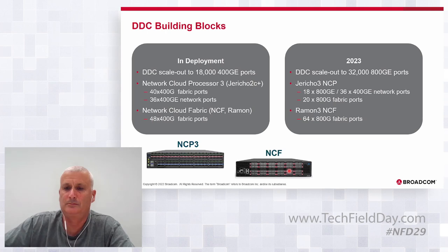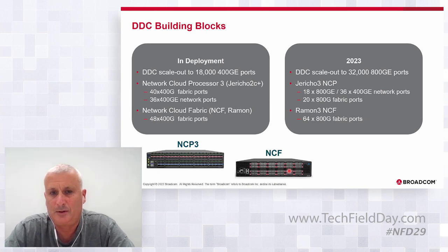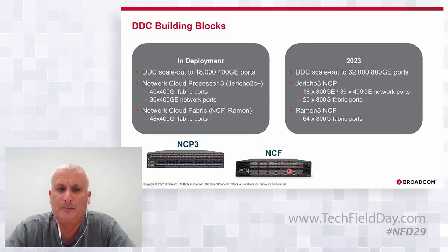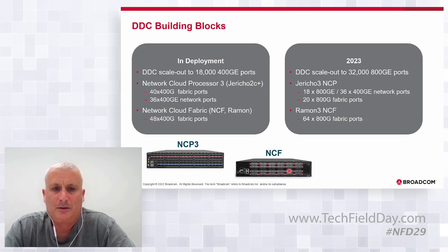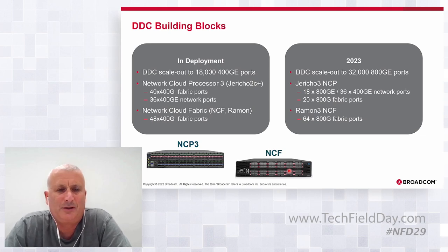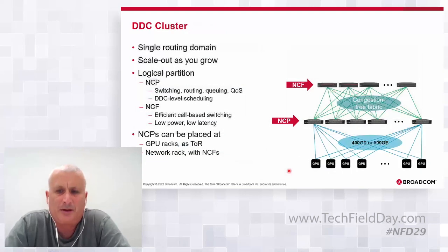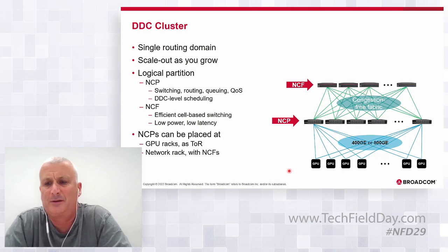Question from audience: If theoretically you can do 8K 400-gigabit ports currently, what's the biggest one actually in production? Answer: The biggest one has something like one petabit per second of interfaces, or a little less than that.